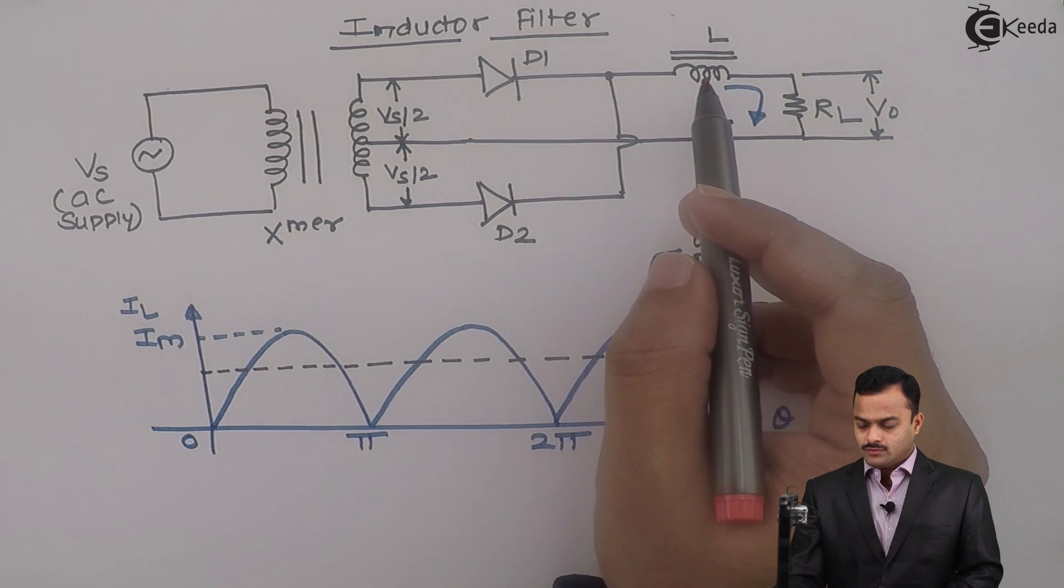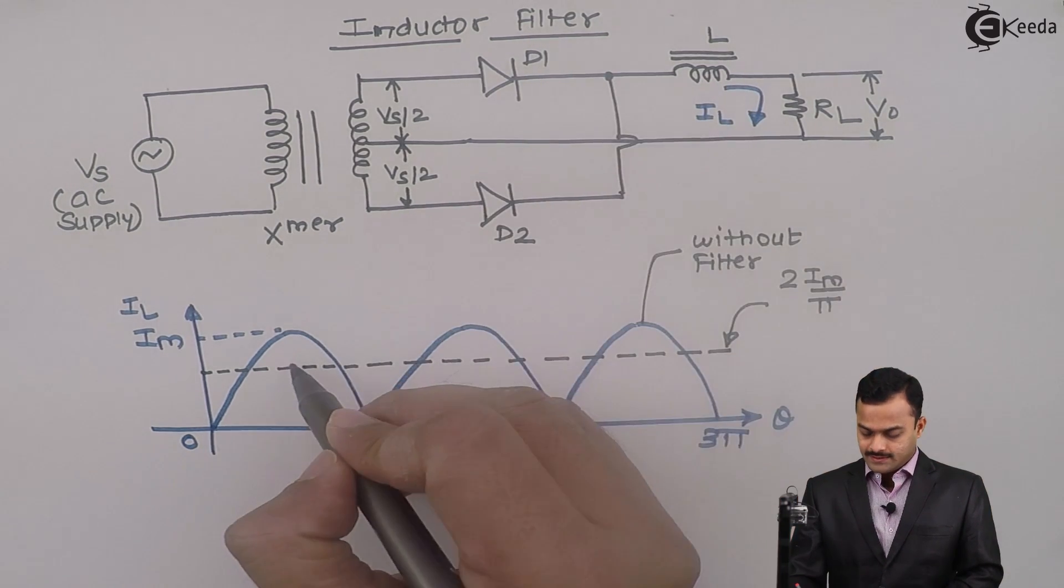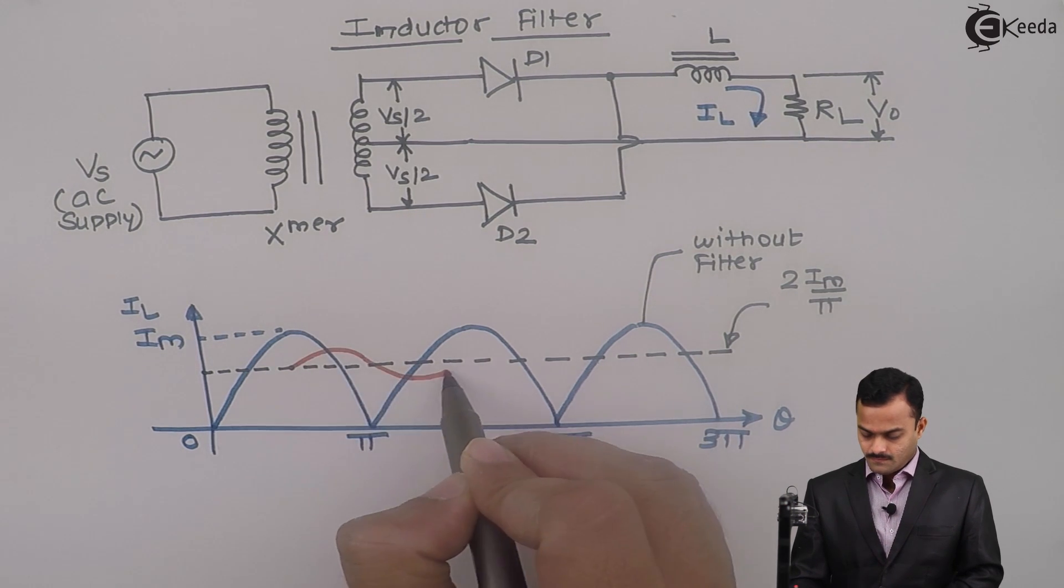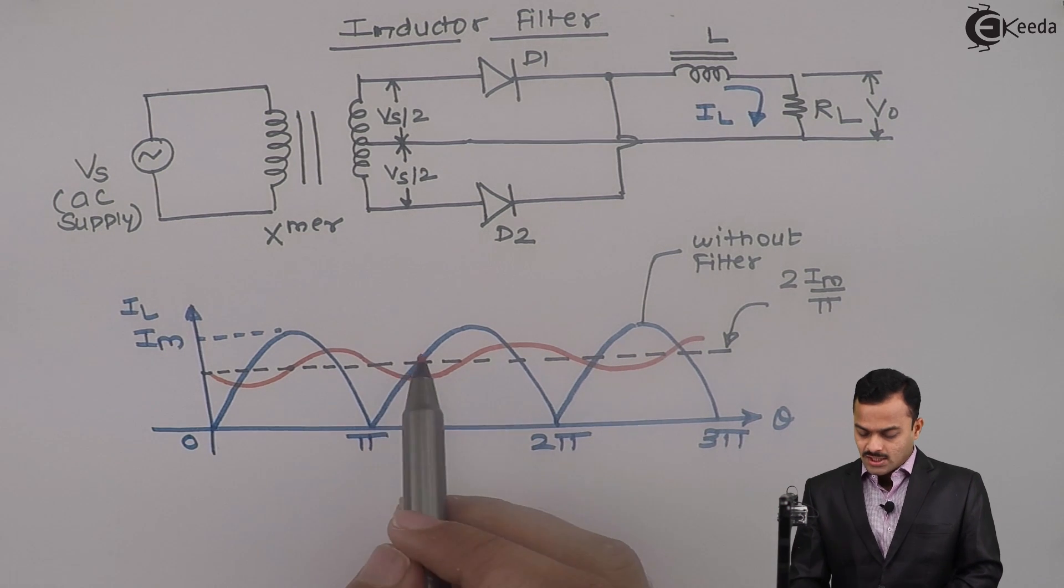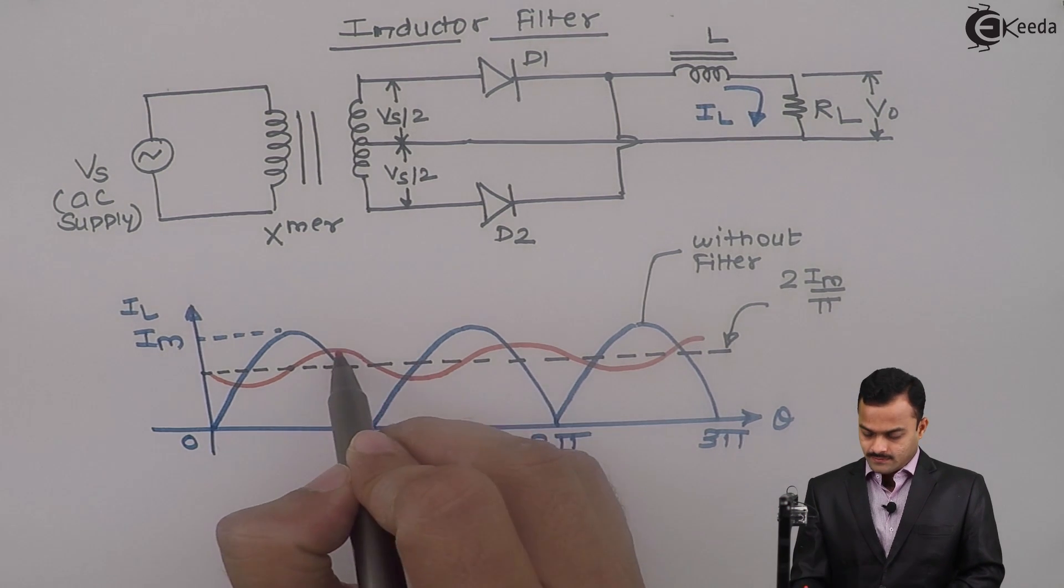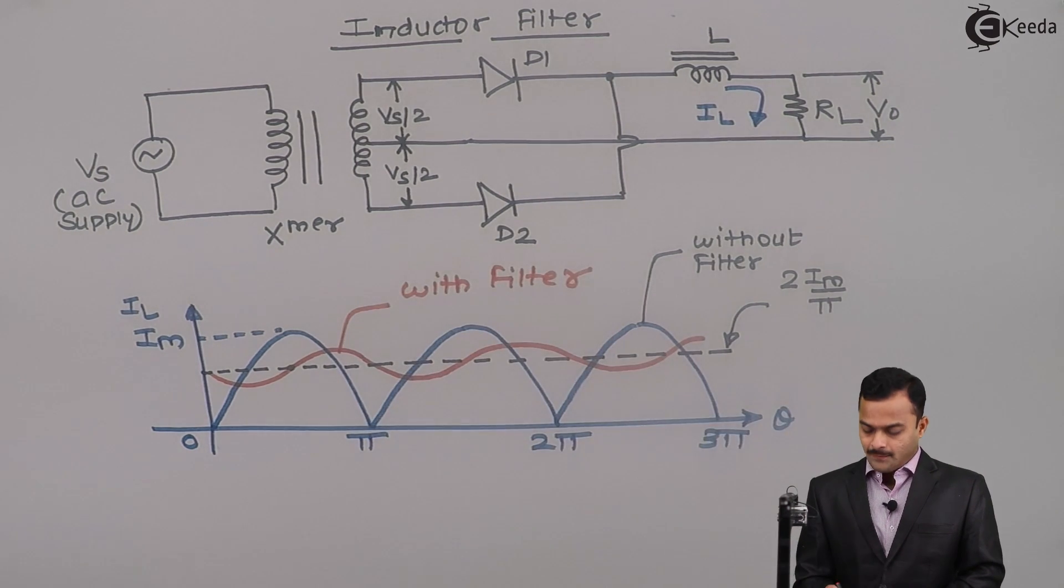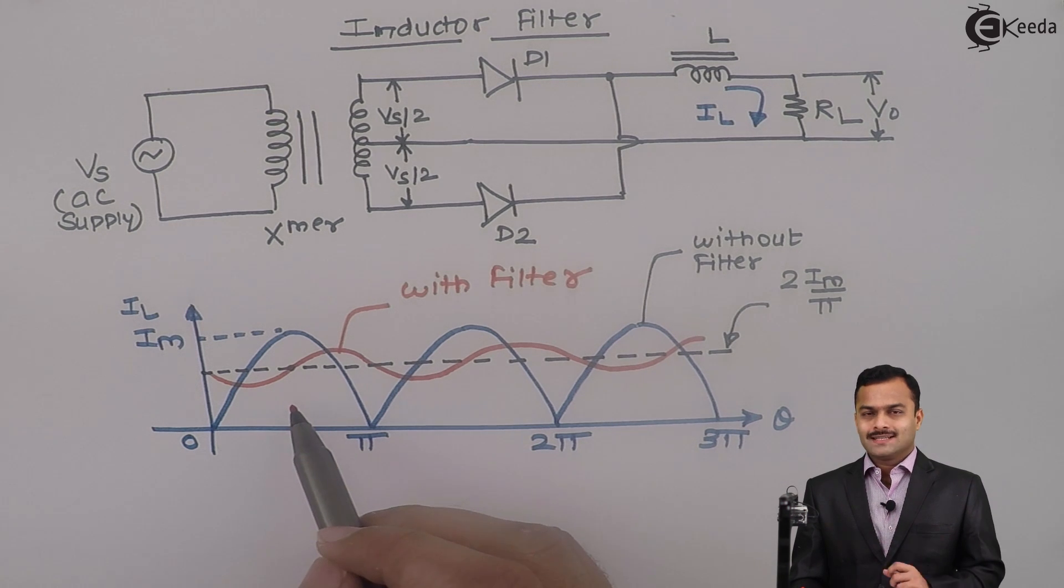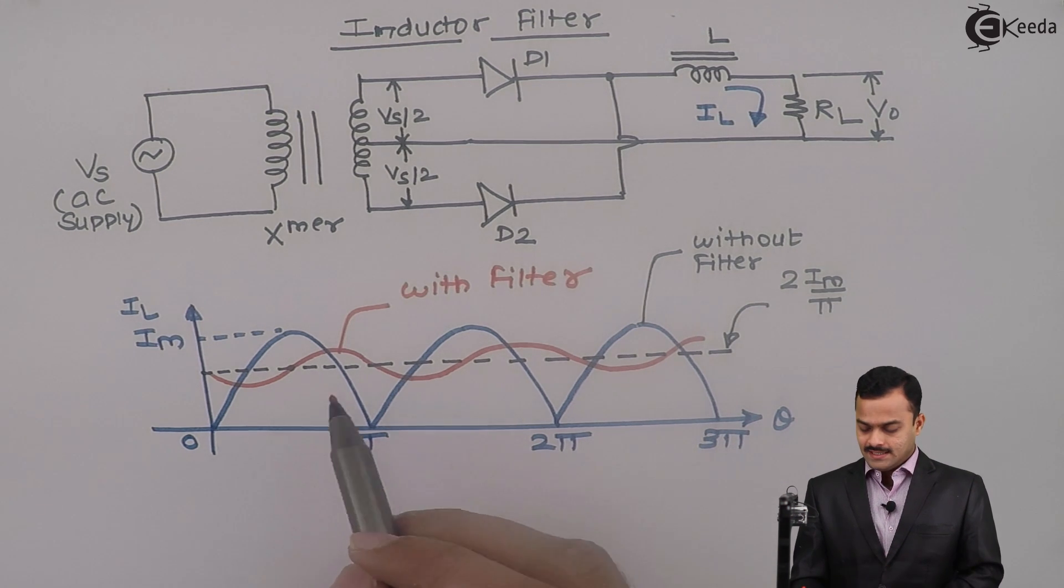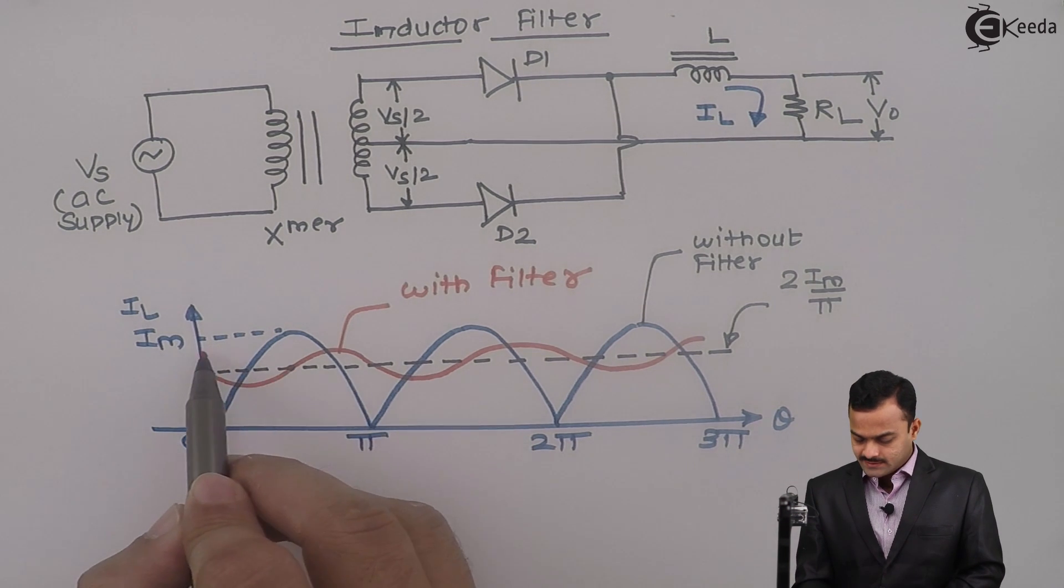Actual current waveform whenever you connect a filter circuit in series with a rectifier will be like this. So this is the nature of output current you are getting if you connect a filter. If you see properly, still it is not a pure DC, but compared to the without filter waveform, the waveform is much better in the sense that here AC component is very less and that component is this much only.